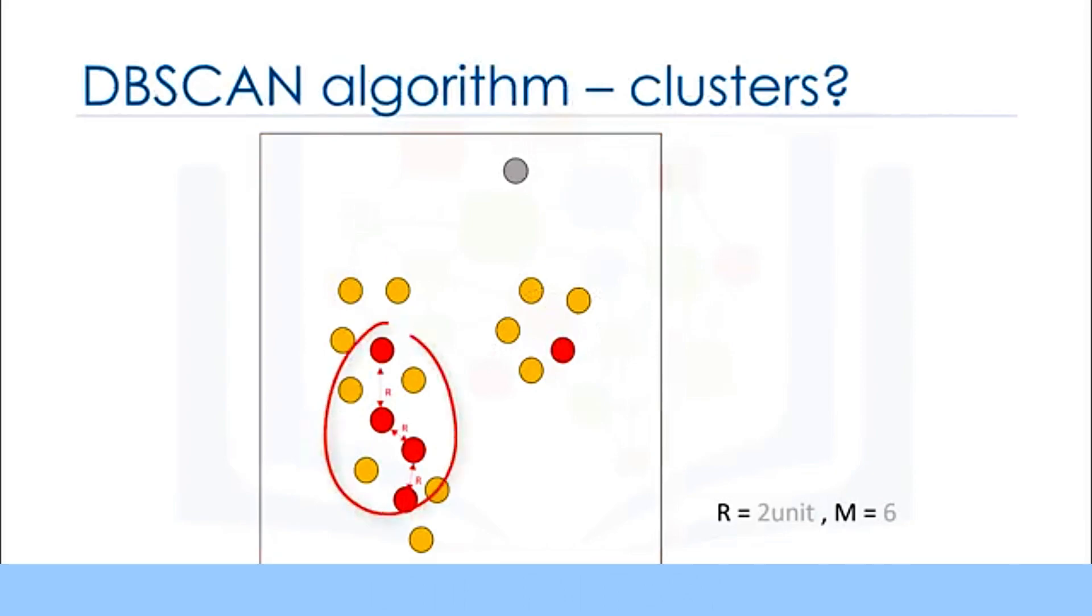The next step is to connect core points that are neighbors and put them in the same cluster. So a cluster is formed as at least one core point, plus all reachable core points, plus all their borders. It simply shapes all the clusters and finds outliers as well.